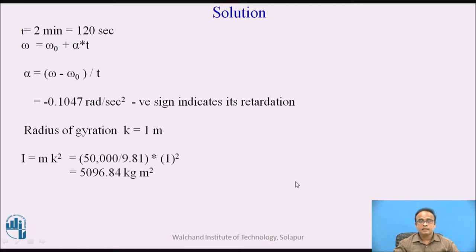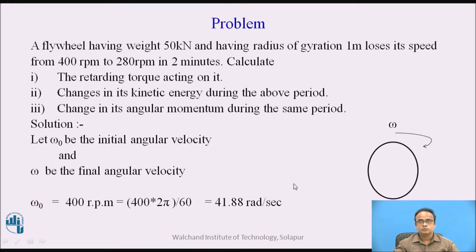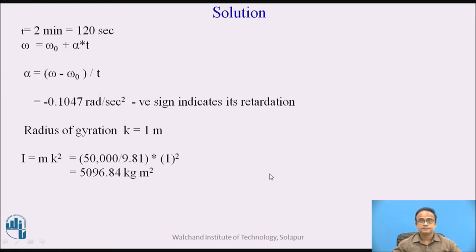The time given for the flywheel to come from 400 RPM to 280 RPM is 2 minutes. So t equals 2 minutes, which is equal to 120 seconds, obtained by multiplying 2 by 60.